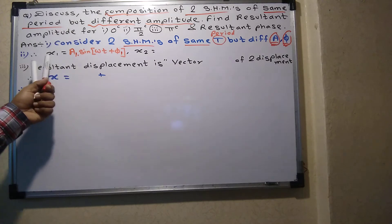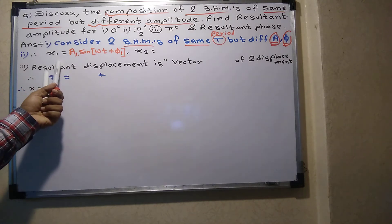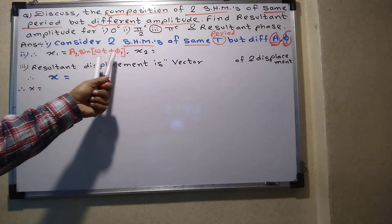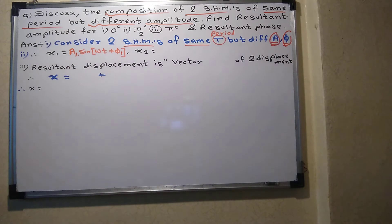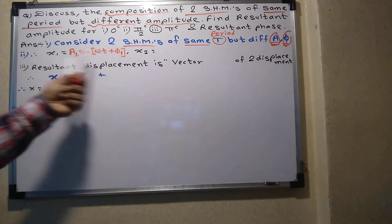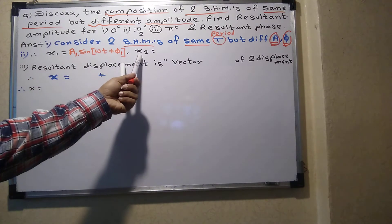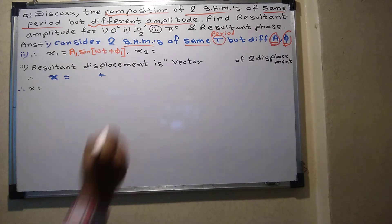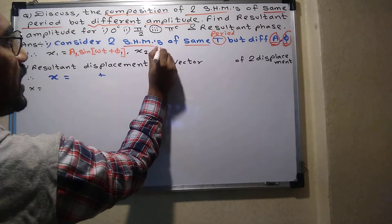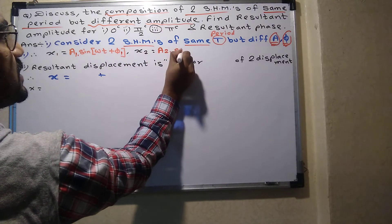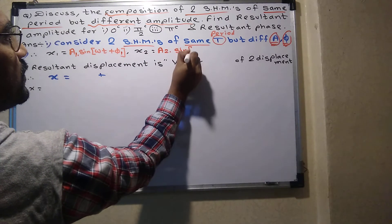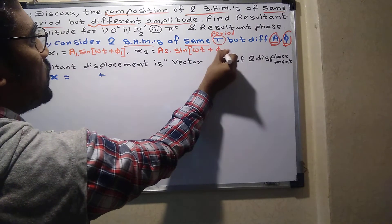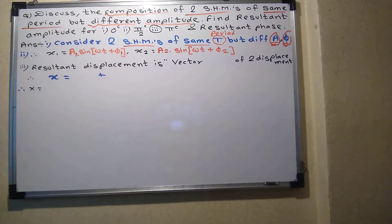So the first SHM is X1 = a1·sin(ωt + φ1). Similarly, for X2, it will be X2 = a2·sin(ωt + φ2).